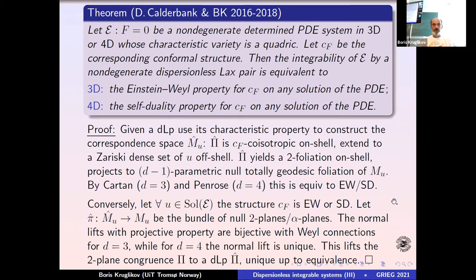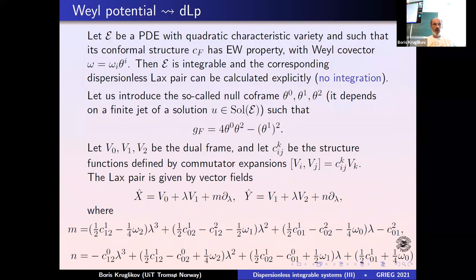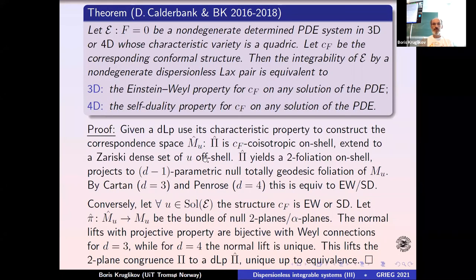In 4D everything is very simple because we just use the conformal structure: compute the conformal structure, then compute the Weyl tensor and take half of it — either the self-dual or anti-self-dual part — and check it vanishes on the system. A priori you don't know which part to take, since PDEs are local and locally you don't see orientation. So you check half-conformal flatness. In 3D it's a bit more complicated because the conformal structure doesn't specify the Weyl connection — you need a choice of Weyl connection, which can be given by a choice of one-form, or modulo gauge change.